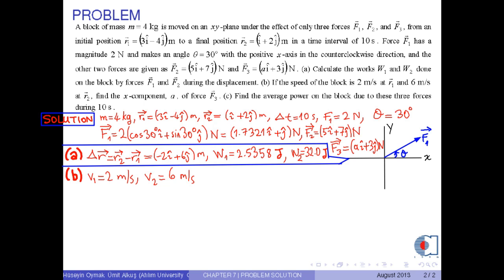First, let us find the work done by force F3. W3 equals F3 dot delta R. We substitute the values into this equation, and by the rule of dot product, we obtain 18 minus 2 times A joules. As a result, the total work done by the three forces is W total equals W1 plus W2 plus W3. With the corresponding values, we have 52.536 minus 2A joules.